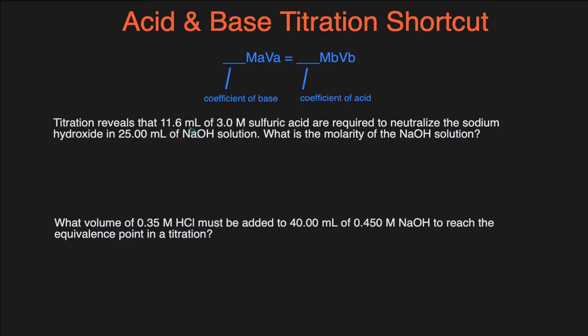Titration reveals that 11.6 milliliters of 3.0 molar sulfuric acid are required to neutralize the sodium hydroxide in 25 milliliters of sodium hydroxide solution. What is the molarity of the sodium hydroxide solution? So let's break it down.